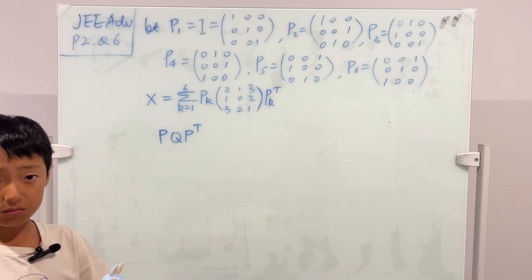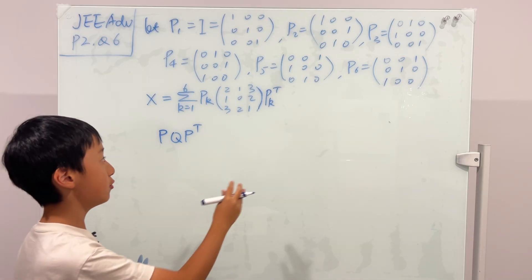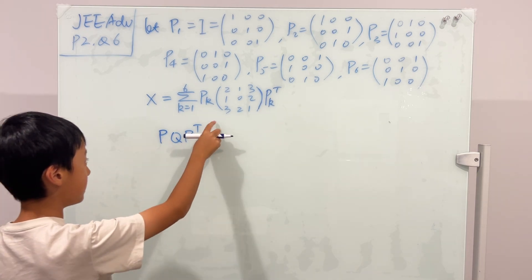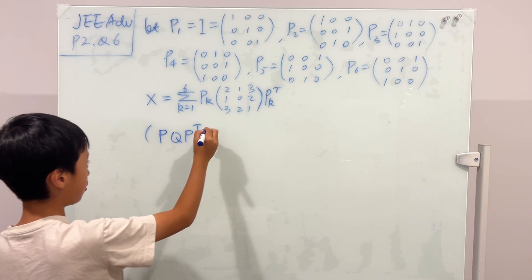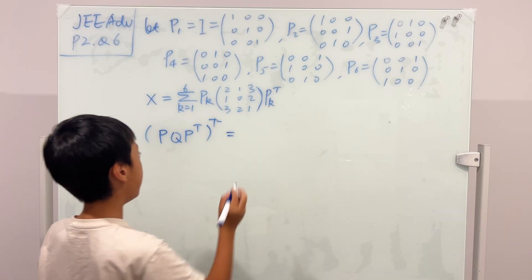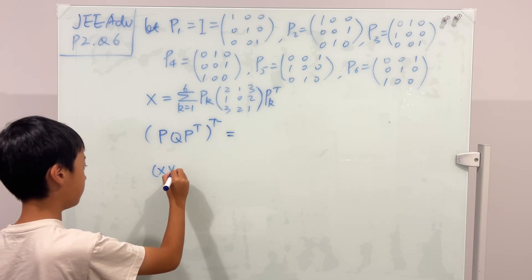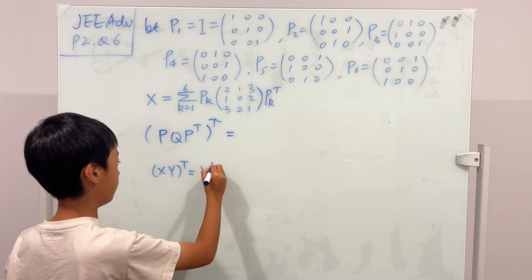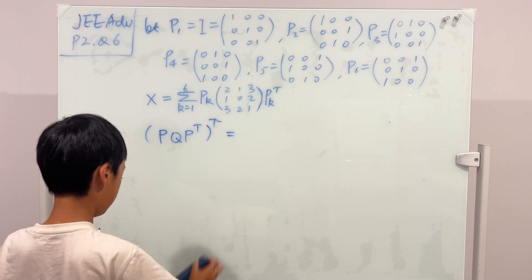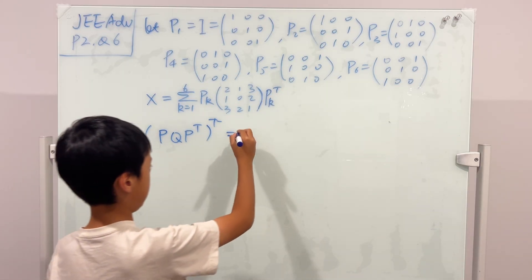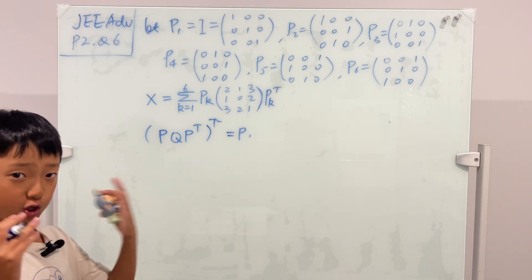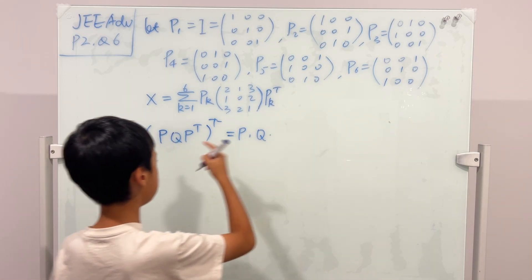If you take the transpose of a symmetric matrix it stays the same. So we should take the transpose of P·Q·Pᵀ and check if it's symmetric. Using the identity (XY)ᵀ = Yᵀ·Xᵀ, we get (Pᵀ)ᵀ = P, then Qᵀ — but since Q is symmetric, Qᵀ = Q — and then Pᵀ. So the result is P·Q·Pᵀ, which is the same as the original.